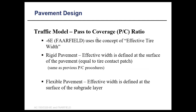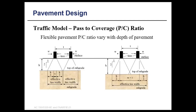The pass-to-coverage ratio is 6E. The method uses the concept of effective tire footprint. For rigid pavement, the effective footprint is defined at the surface of the pavement, equal to the contact tire mark. For flexible pavement, the effective footprint is defined at the surface of the subgrade. This explains the pass-to-coverage method: you estimate the tire pressure at the top of the subgrade. Depending upon the type of vehicle, you have overlapping pressure bulbs.